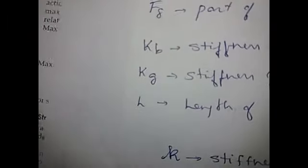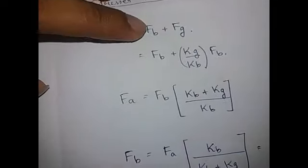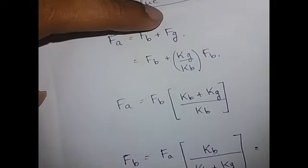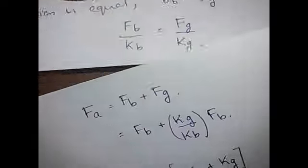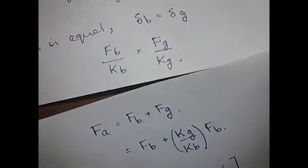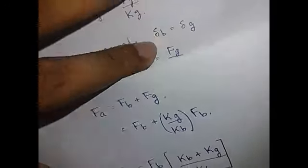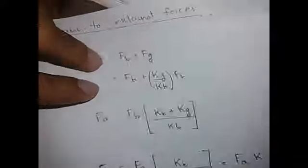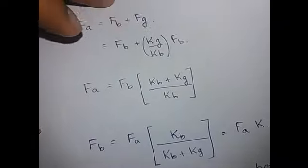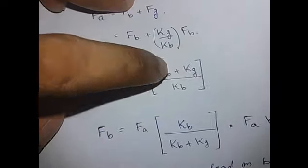We say that the deformation area is the same. F is equal to FB by FG. The F is KG by KB into FB. Therefore, we write this equation: KG into KG divided by KB into FB. We are going to cross-multiply, so F is equal to FB into (KB plus KG) divided by KB.